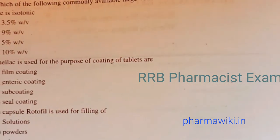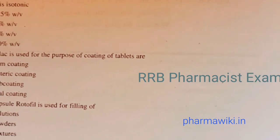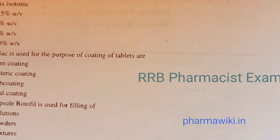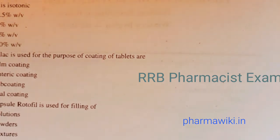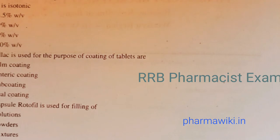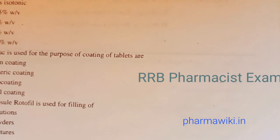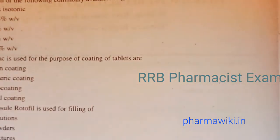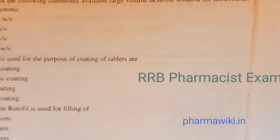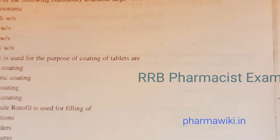Question 8: Which of the following commonly available large volume dextrose solutions for intravenous use is isotonic? Options: 8.5% w/v, 9% w/v, 5% w/v, or 10% w/v. The answer is C, 5% weight by volume. The isotonic dextrose solution for IV use is 5% w/v.